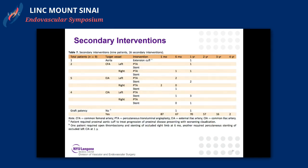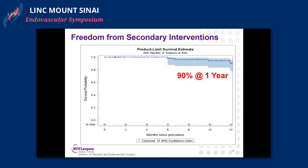Secondary interventions occurred usually at six months to one year — nine patients with 16 secondary interventions. There were a couple of patients with occlusions requiring thrombectomy, and in one case a stent placement. Freedom from secondary interventions at one year was quite good at 90%.